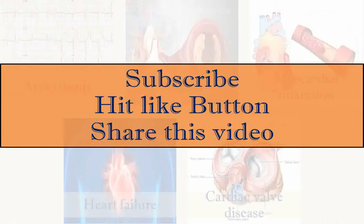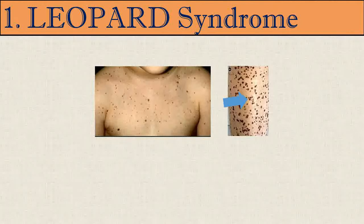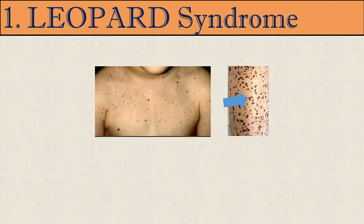The first disease is LEOPARD Syndrome — also known as Noonan Syndrome with Multiple Lentigines — a rare autosomal dominant multi-system disease caused by genetic mutation. The disease involves features mostly affecting the skin, skeletal, and cardiovascular systems, which may or may not be present in all patients. The name LEOPARD is a mnemonic originally coined in 1969, characterized by seven conditions whose first letters spell 'LEOPARD.'